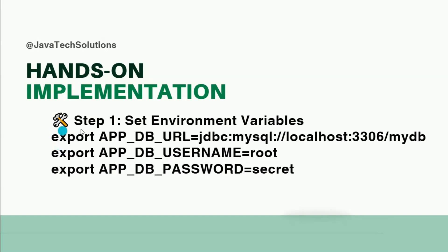To implement this in your application, step one is to set the environment variables. On Linux, use `export` followed by the key and value — for example, `export DB_URL=...`, `DB_USERNAME`, and `DB_PASSWORD`. On Windows, use the `set` keyword instead of `export`. This is how you set environment variables depending on your operating system.